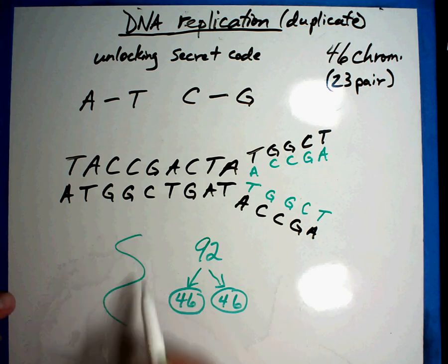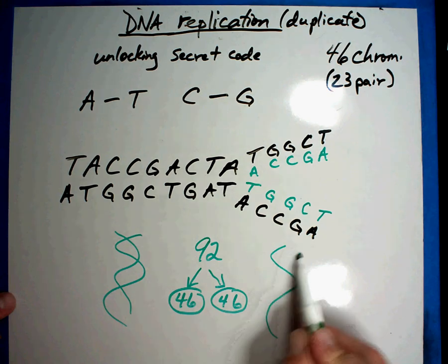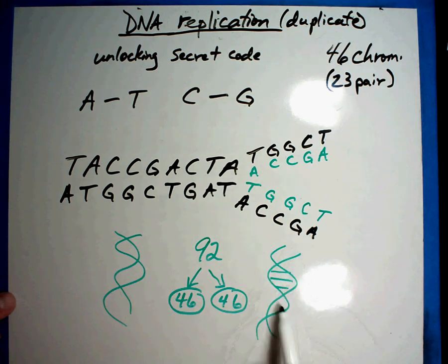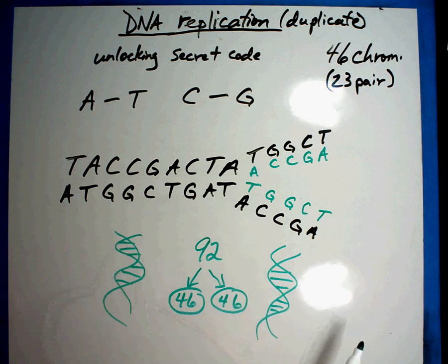So you end up having one set that goes in one cell, and you have another set that goes in another cell. And now both cells are identical to each other, and they have exactly the same chromosomes. This is how you duplicate your cells and the DNA that's in them.